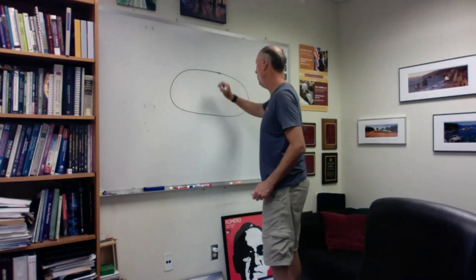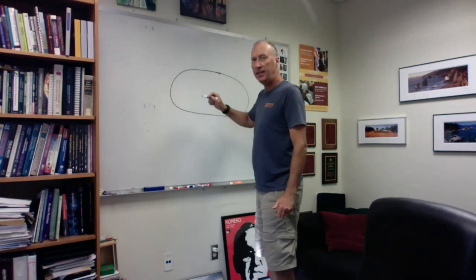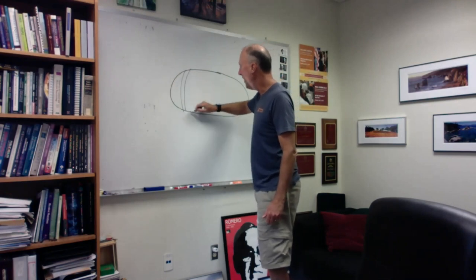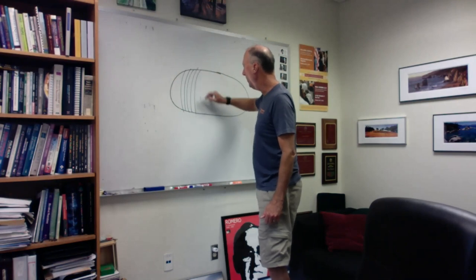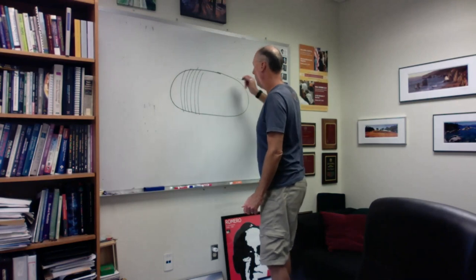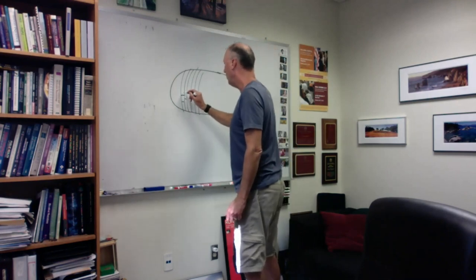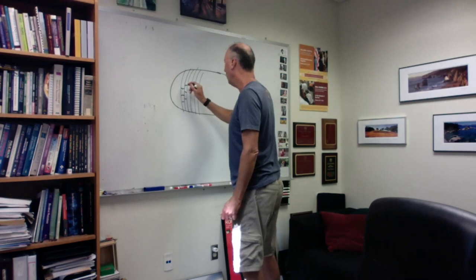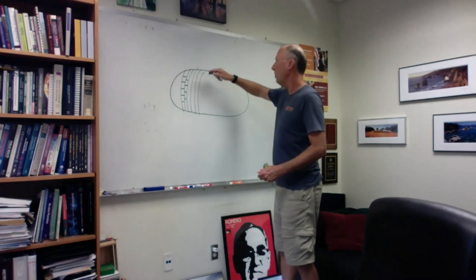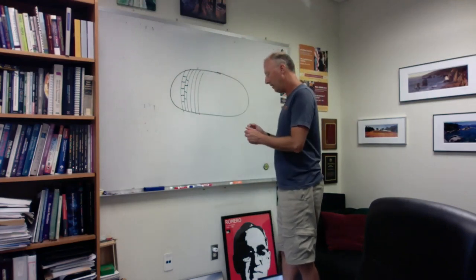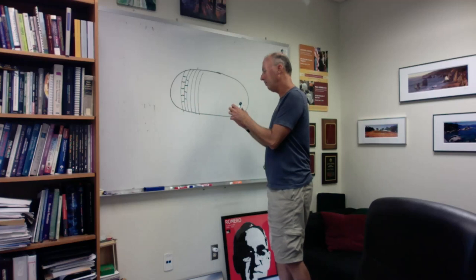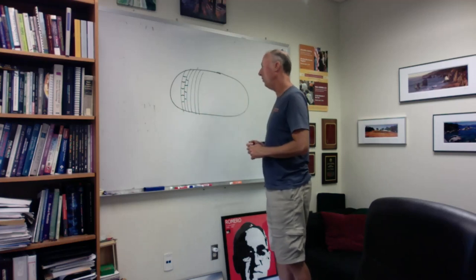For a simple rod-shaped bacterium like E. coli, what we have with the cell wall is strands of peptidoglycan going around and around, wrapping around the cell with alternating cross-links. In reality, this isn't to scale at all, and there would be multiple layers. This forms a strong but flexible protective layer around the bacterial cell.